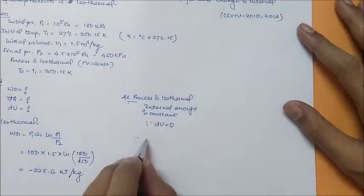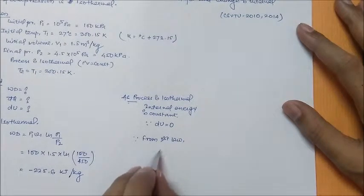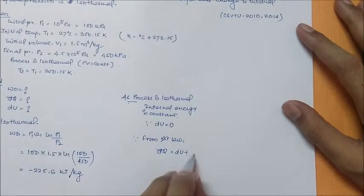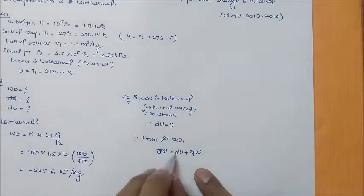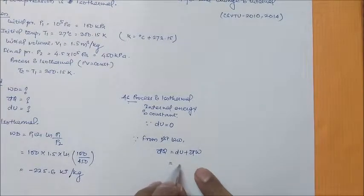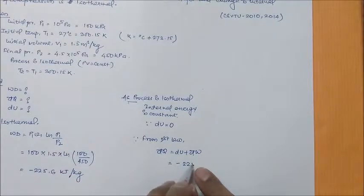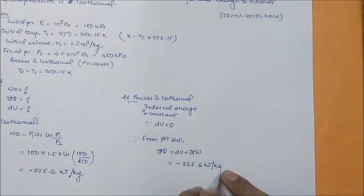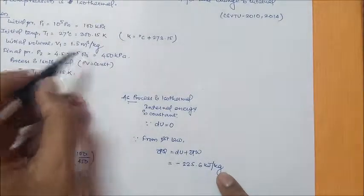Now we have to find out heat from first law. We have δQ equal to dU plus δW. As we know that dU is 0, so δQ will be same as that of work done which we have calculated before as minus 225.6 kilojoule per kg.